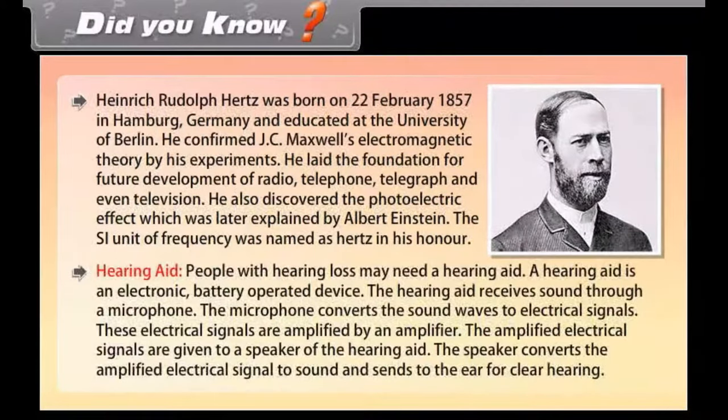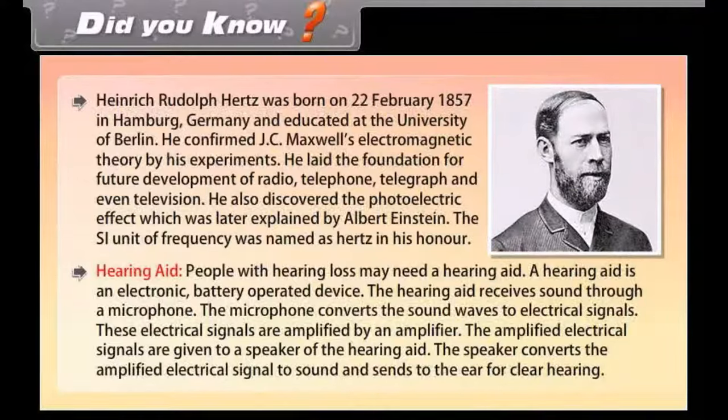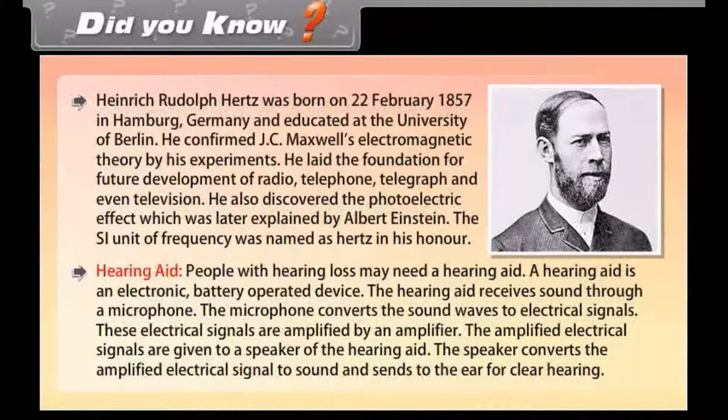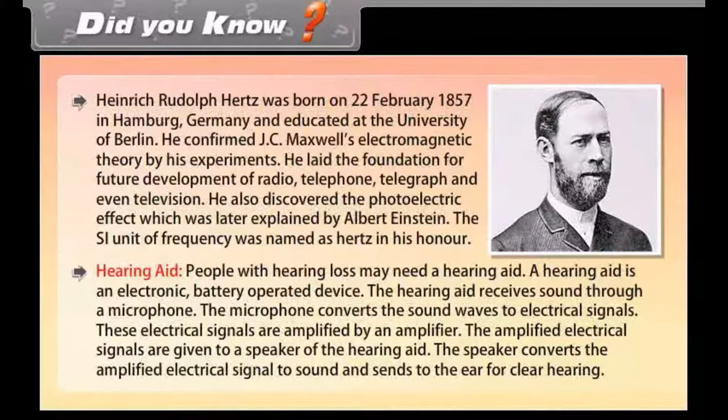Hearing Aid. People with hearing loss may need a hearing aid. A hearing aid is an electronic battery operated device. The hearing aid receives sound through a microphone. The microphone converts the sound waves to electrical signals. These electrical signals are amplified by an amplifier. The amplified electrical signals are given to a speaker of the hearing aid. The speaker converts the amplified electrical signal to sound and sends to the ear for hearing.